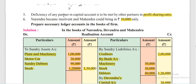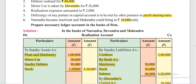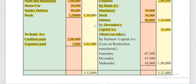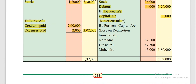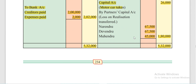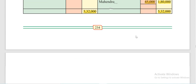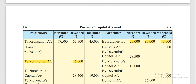Now the adjustments are complete and we have to calculate the deficiency. For that purpose, firstly the Realization Account is closed. The total of the Realization Account comes to Rs 5,32,000 on both sides. There is a loss on realization — which is expected in an insolvency problem. This loss is distributed among all three partners in their profit sharing ratio, and debited in the partners' capital account as 'to Realization Account'.